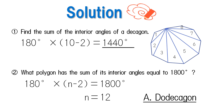For number two, the sum of the interior angles of polygon N is 180 times (N minus two) and should equal 1800 degrees. Calculating this, we get N equals 12. So the answer is a dodecagon.